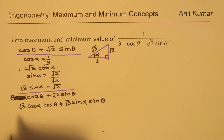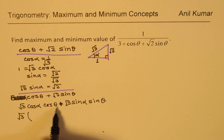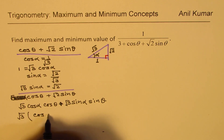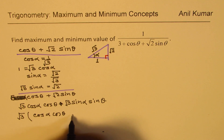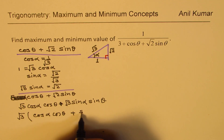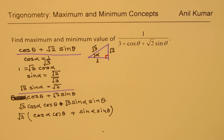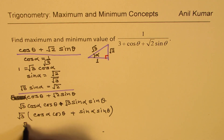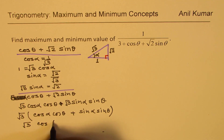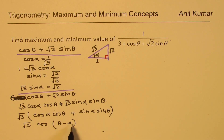By doing this, we get a form of cos(α − θ) or cos(θ − α). Taking √3 common, we get √3 times (cos α cos θ + sin α sin θ), which by the compound angle formula can be written as √3 cos(θ − α).